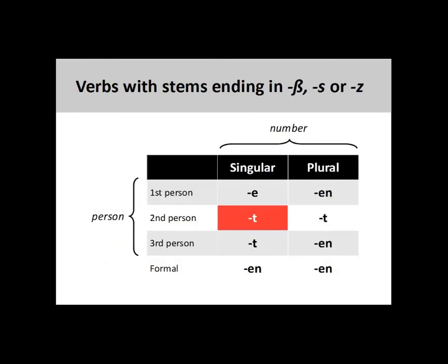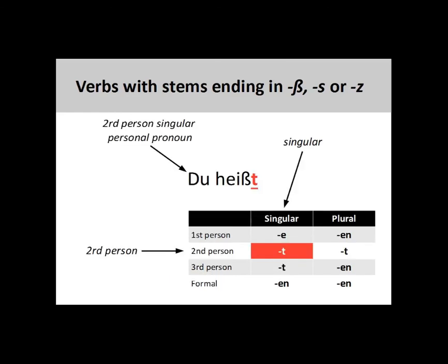Finally, a few regular verbs have a stem ending in -est, which requires another slight variation to the conjugation pattern. The second person singular ending drops the S from the regular ST ending. This exceptional ending is marked in red on the screen. Following the steps described in the previous slides produces 'du heißt,' you are called. Both the subject and verb are in second person singular, creating subject-verb agreement.